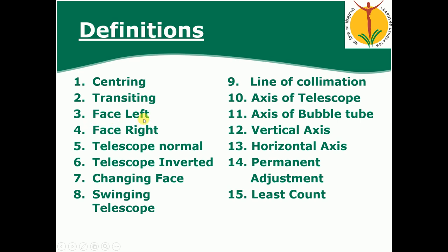Face left means when the vertical circle of the theodolite is on the left side of the observer — that is called the face left position. When the vertical circle is on the right side of the observer, that position is called face right. The face left position is called telescope normal and the face right is called telescope inverted. Changing of face means bringing the theodolite from face left to face right by means of transiting.